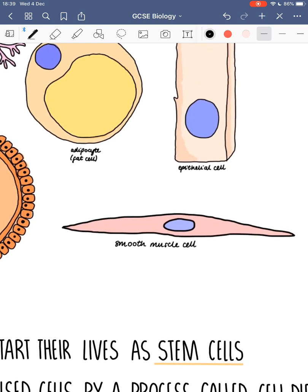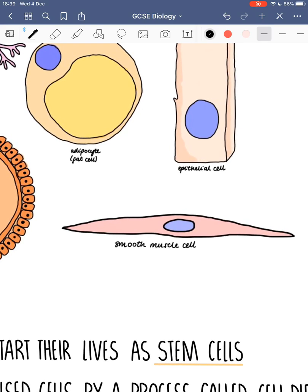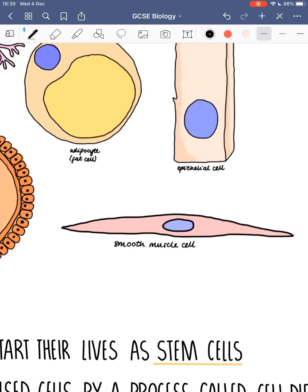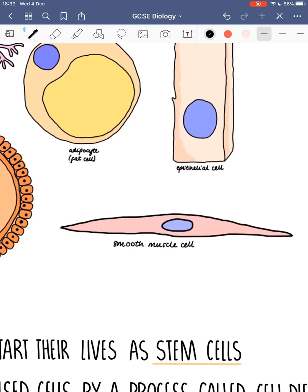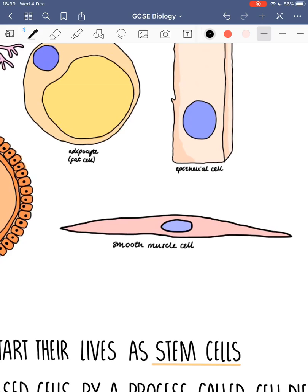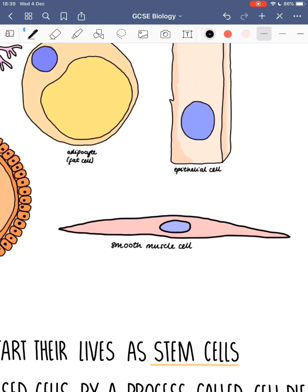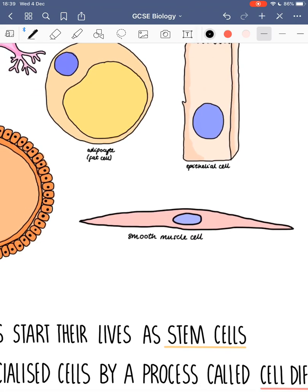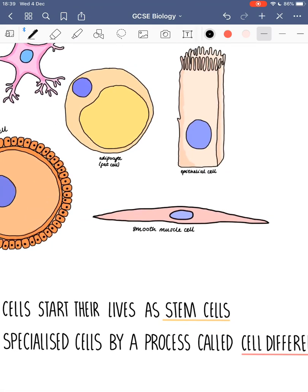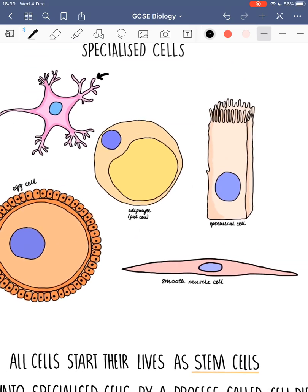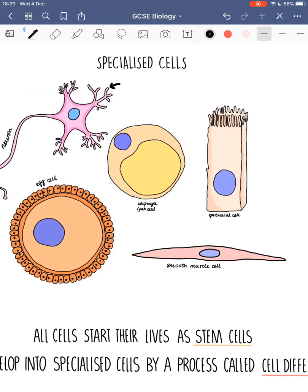The smooth muscle cell is long and thin, so it can pack tightly with other muscle cells, allowing them to work together to carry out muscle contraction. These cells are also packed full of mitochondria, which means they can generate loads of energy needed for that contraction. These aren't the only specialised cells — if you think of red blood cells, root hair cells, and sperm cells, pretty much every cell has its own unique shape and adaptations to help it carry out its function.